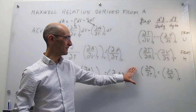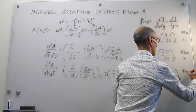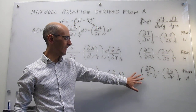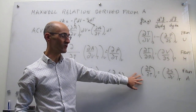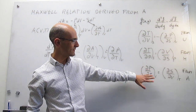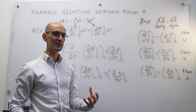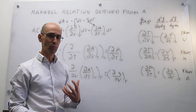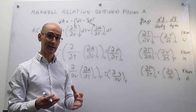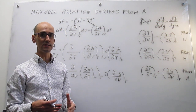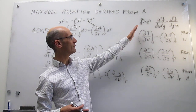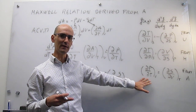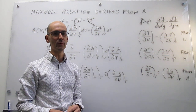In the next video, we're actually going to take this Maxwell relation that we've just derived from the Helmholtz energy and look at it in a little bit more depth, so you can see how useful it is. It turns out these first derivatives can be nicely interpreted using experiments — there's a connection to tangible, measurable quantities. After that, we will continue with the Gibbs energy to derive the fourth Maxwell relation.